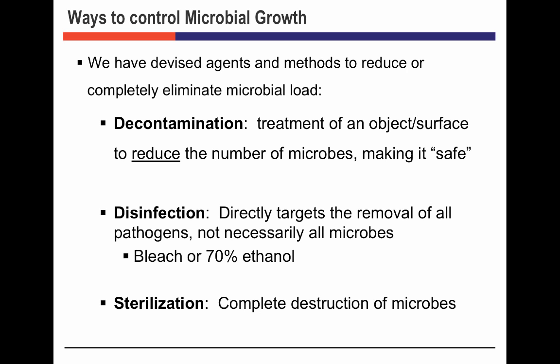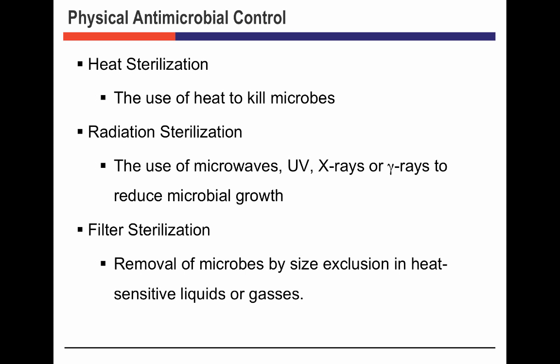When we want to remove microorganisms, we can do it physically: we can kill them by heat, by radiation, or remove them by filter sterilization. Every time we autoclave something in the lab, we are using heat to remove potential pathogens. When mothers use a pressure cooker to sterilize baby bottles — putting them in steam — they are using heat sterilization, removing microorganisms so that food in the bottle doesn't spoil.